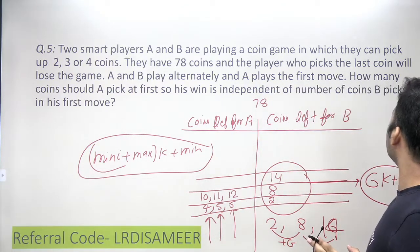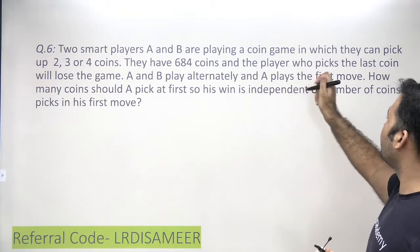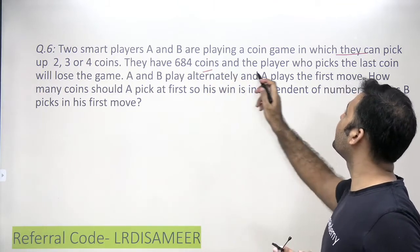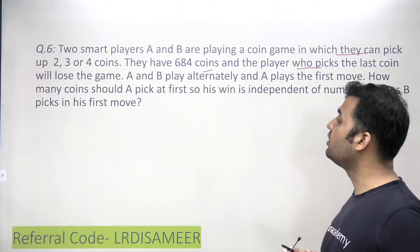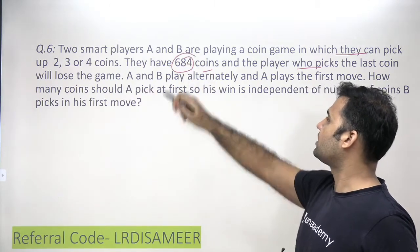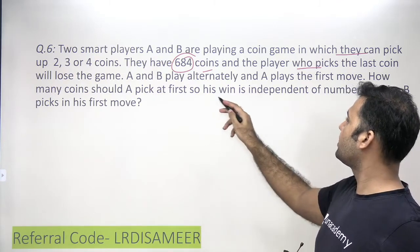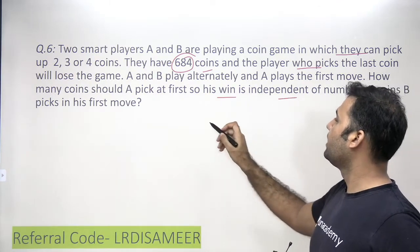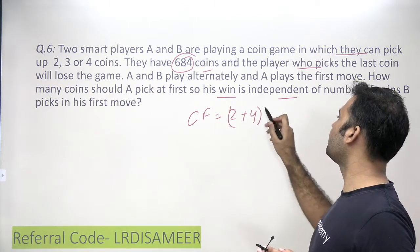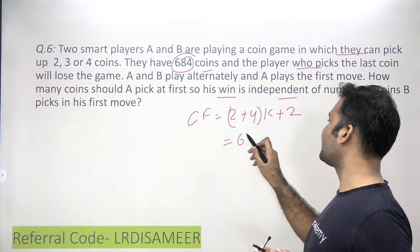One more question: two players A and B play a coin game picking 2, 3, or 4 coins. They have 684 coins and the player who picks the last coin loses. A plays first. The controlling factor is again minima plus maxima into k plus minima, which is 2 plus 4 into k plus 2, giving 6k plus 2. I need a number that when divided by 6 gives remainder 2.